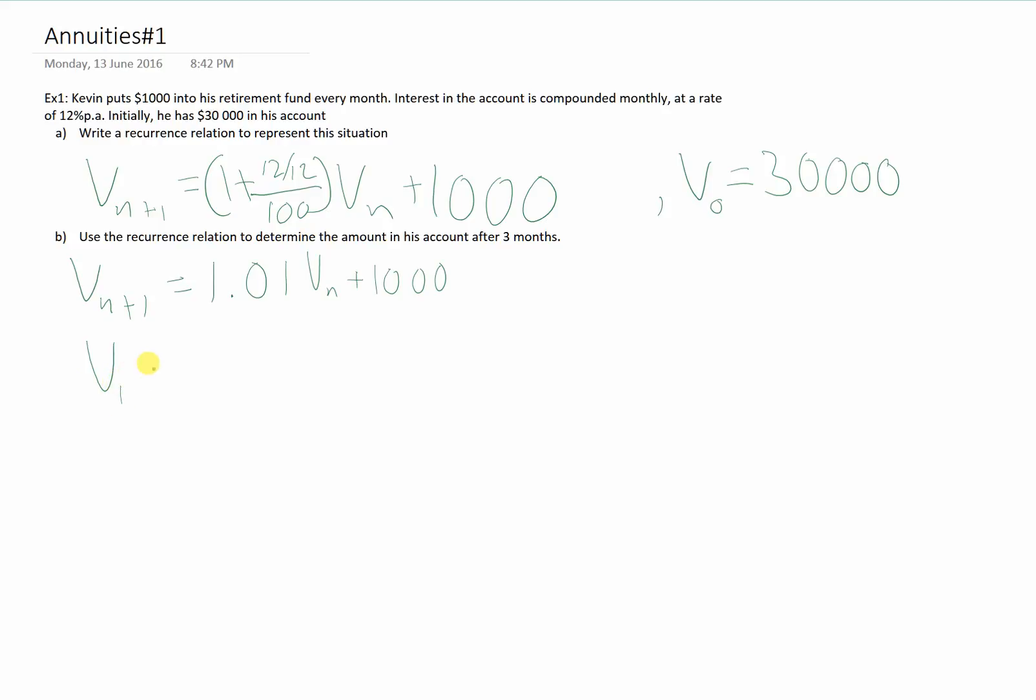So, V1. Well, that's 1.01 times V0 plus 1,000, which is 1.01 times 30,000 plus 1,000. V1 is $31,300.